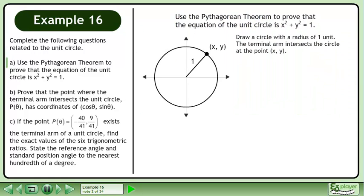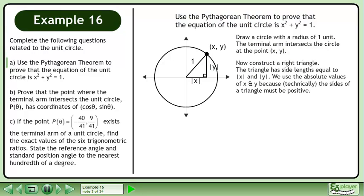Draw a circle with a radius of one unit. The terminal arm intersects the circle at the point xy. Now construct a right triangle. The triangle has side lengths equal to the absolute value of x and the absolute value of y. We use the absolute values of x and y because technically the sides of a triangle must be positive.